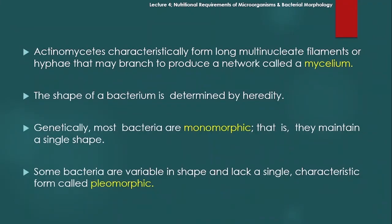Genetic خصوصیات کی بنیاد پر bacteria کا shape determine کر سکتے ہیں۔ Genetically most bacteria are monomorphic — یعنی وہ usually ایک قسم کا shape رکھتے ہیں، that is they maintain a single shape۔ لیکن بعض bacteria ایسے ہوتے ہیں جن کی shapes میں variation آتا ہے — ایسے bacteria کو pleomorphic کہتے ہیں۔ Some bacteria are variable in shape and lack a single characteristic form۔